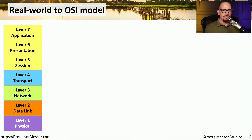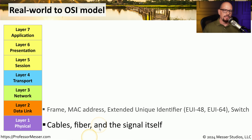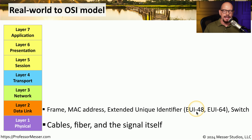How do we fit real-world things into each OSI layer? At layer 1, the physical layer: cables, fiber optic connections, signals across those connections, and wireless networks. At layer 2, the data link layer: ethernet frames, MAC addresses, and extended unique identifiers — EUI 48 and EUI 64 addresses. The switching process also operates at OSI layer 2.